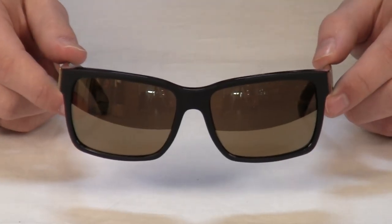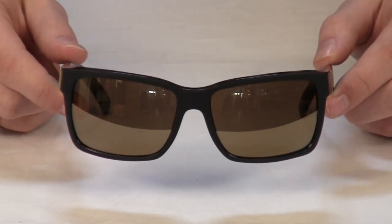The Von Zipper Elmore sunglasses are designed in California and made in Italy.